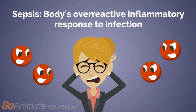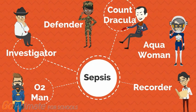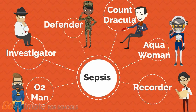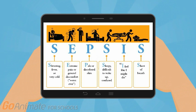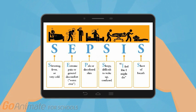In summary, sepsis is a multi-organ shock caused by the body's overreactive inflammatory response to infection. You have also met the Sepsis 6 characters and what they do to help people with sepsis. With sepsis, faster treatment equals a greater chance of survival. If you have an infection and show symptoms such as slurred speech, extreme shivering or muscle pain, passing of urine, and severe breathlessness, seek medical help immediately.